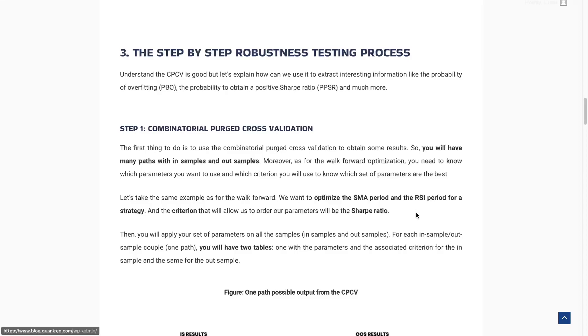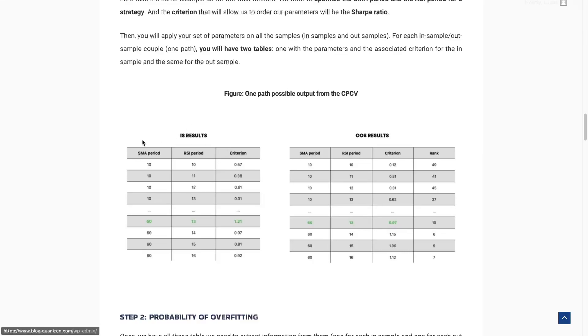Now let me explain in detail the steps to create our robustness test using the CPCV. First, you take the same parameters you want to optimize as in the workflow optimization — for us, the SMA period and RSI period. The criterion will be the Sharpe ratio, though you can use any criterion you want. This time, we compute the Sharpe ratio on all possible parameter combinations for the in-sample, but also for the out-of-sample. When we worked with the workflow optimization, we computed all possibilities on the in-sample and backtested using only the best one.